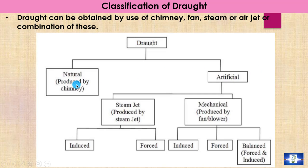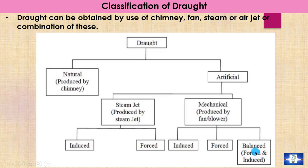This draft system can be classified as natural draft and artificial draft. Natural draft is produced by the chimney. Artificial draft is classified as steam jet draft and mechanical draft. In the case of steam jet draft, the draft is caused by the steam jet. In the case of mechanical draft, a fan or blower produces the draft. Mechanical draft is further classified as induced draft, forced draft, and balanced draft — where forced and induced draft are used in combination. Steam jet draft is also classified as induced draft and forced draft.